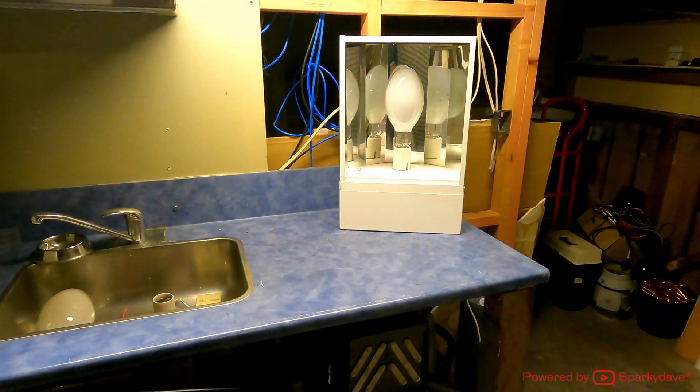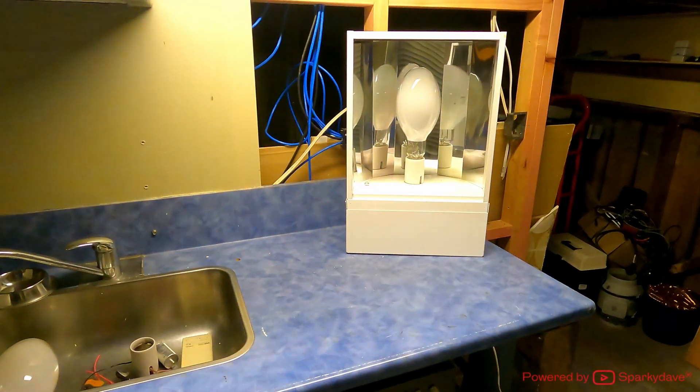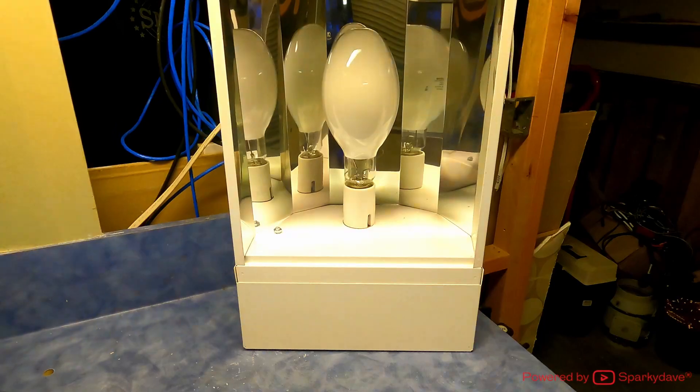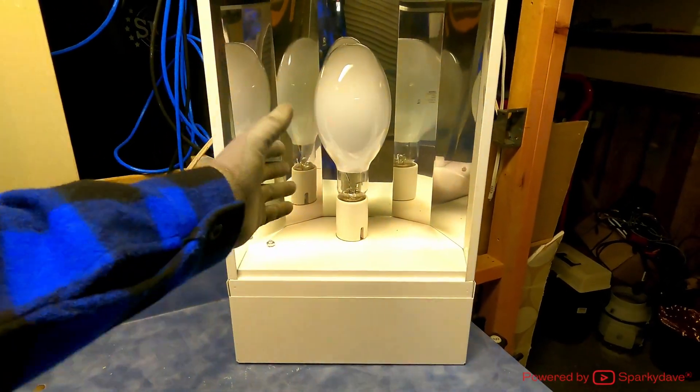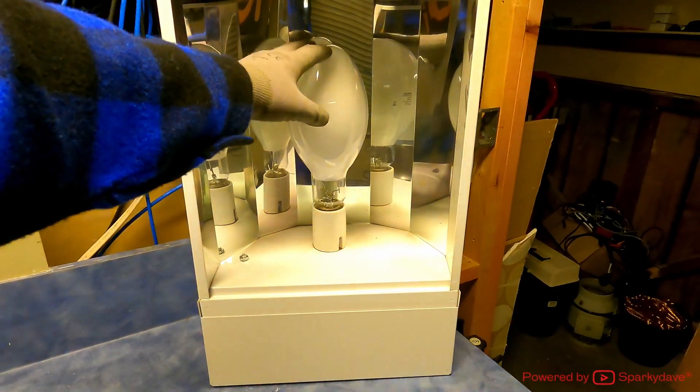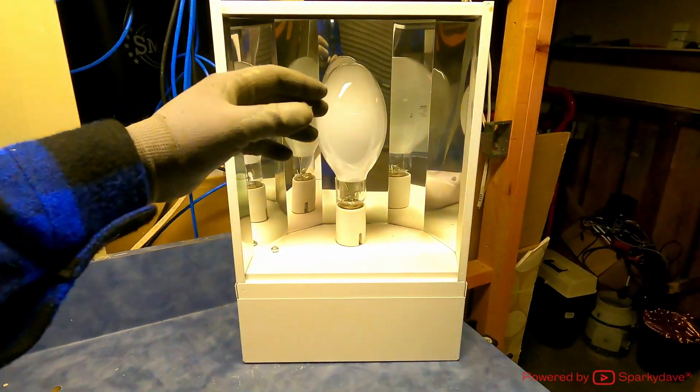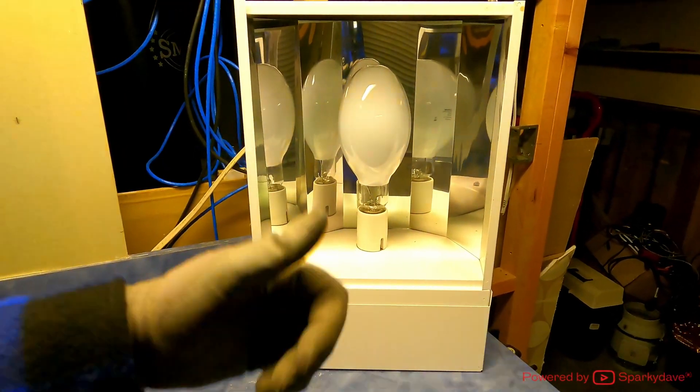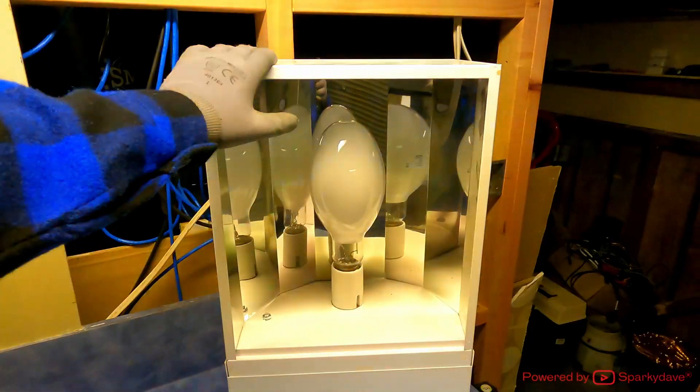G'day everyone. Today's video we're looking at high intensity discharge lighting. There's three main types of high intensity discharge lighting. First of all, this one here is a metal halide lamp. There's also mercury vapor and high pressure sodium.